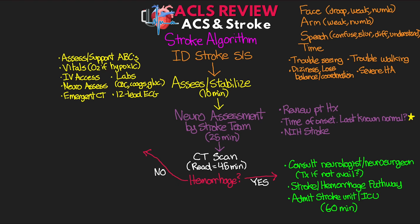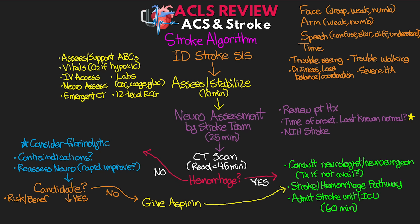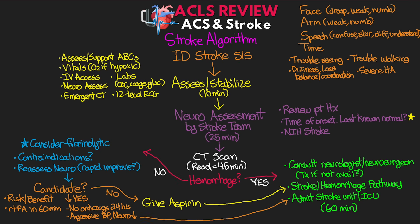If there is no hemorrhage, we want to consider fibrinolytic therapy. We evaluate for contraindications and assess the patient's neurological status, including whether their symptoms are rapidly improving. From there, we ask if they are a candidate for TPA. If not, we give aspirin and move to the final step of the hemorrhagic branch. If yes, we rapidly review the risks and benefits with the patient and/or family, and if they accept, we give TPA within 60 minutes from the start. During this time, we don't give any anticoagulants or antiplatelets for at least 24 hours. We then begin the TPA stroke pathway, aggressively monitoring blood pressure and watching for any signs of neurological deterioration, and emergently admit them to a stroke unit or ICU.